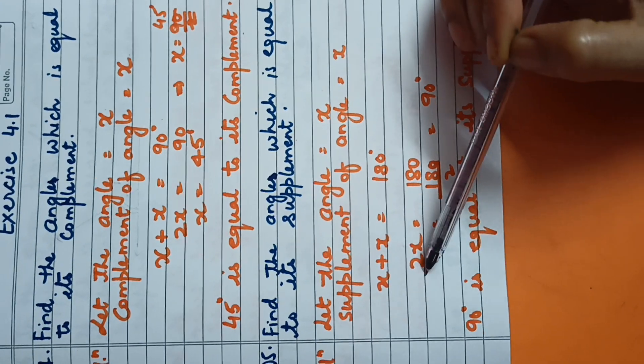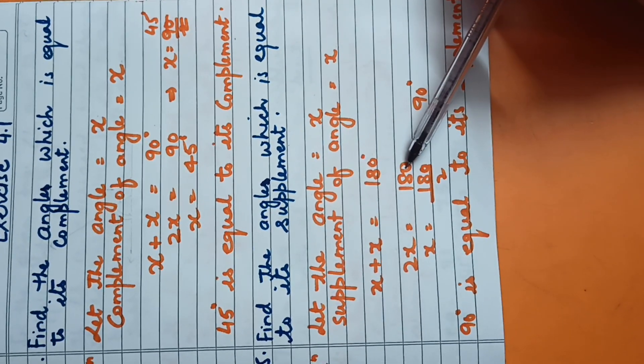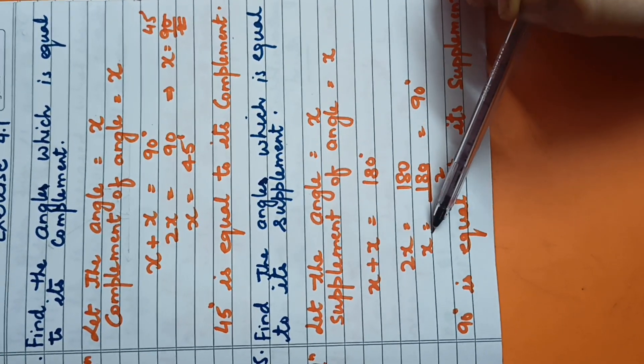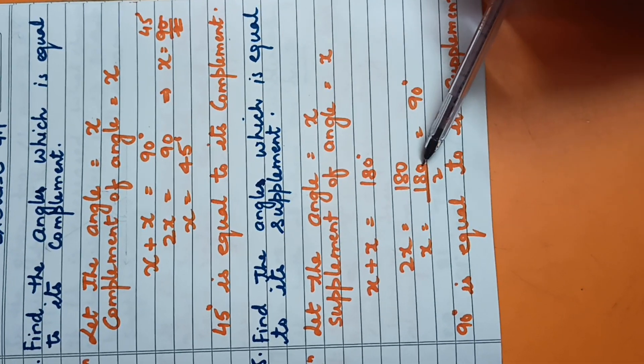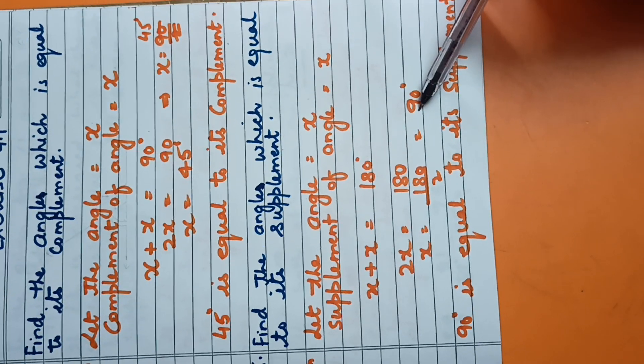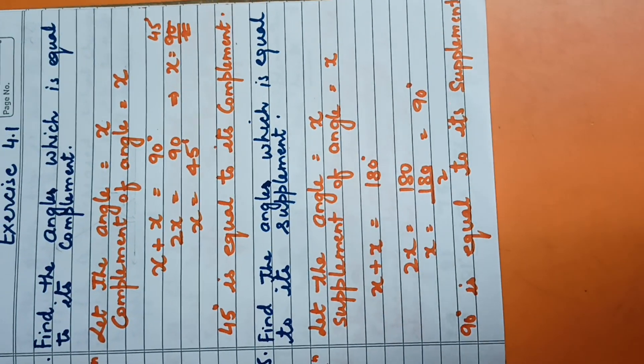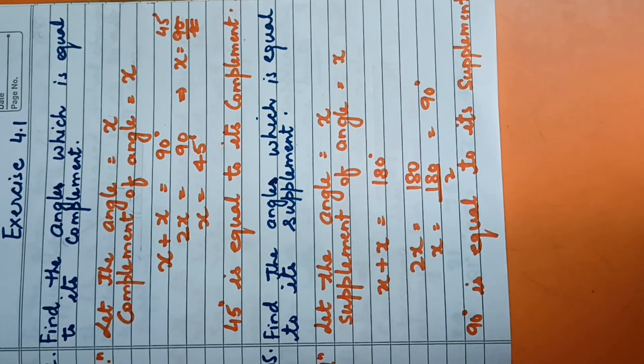Then x plus x is 2x equal to 180 degrees. x equals 180 divided by 2, which is 90 degrees. So, 90 degrees is the angle equal to its supplement.